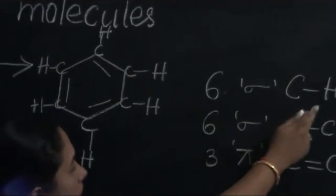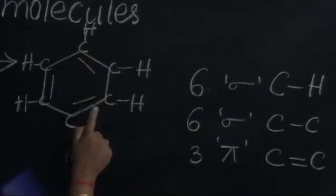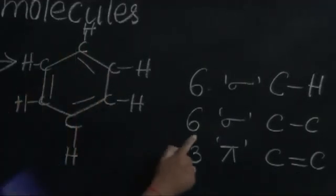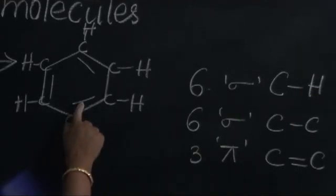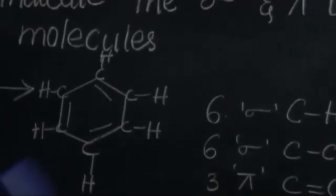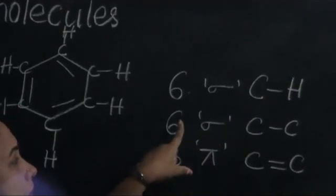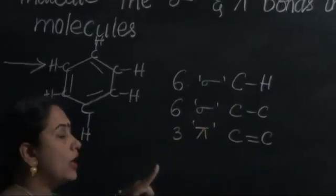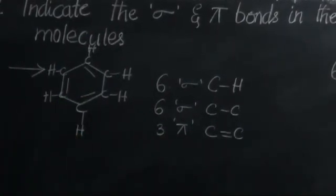Six sigma bonds are there between carbon and hydrogen. Similarly, between each carbon atom in the benzene ring there is one sigma bond. In the ring, we find the presence of double bonds due to the pi electron cloud, and there are three pi bonds. So in the molecule of benzene, C6H6, we find six sigma bonds between carbon and hydrogen, six sigma bonds between two carbon atoms, and three pi bonds between the carbon atoms.